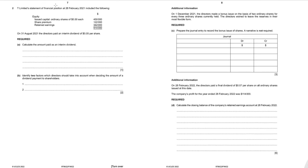Question 2. T Limited's statement of financial position at 28 February 2021 shows equity: issued share capital, share premium, and retained earnings. On 31 August 2021, directors paid an interim dividend of $0.05 per share. Share capital is $450,000 with face value $0.50 per share, so the number of shares = $450,000 ÷ $0.50 = 900,000. Interim dividend = 900,000 × $0.05 = $45,000.